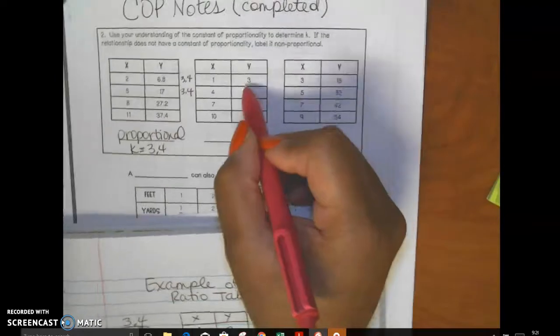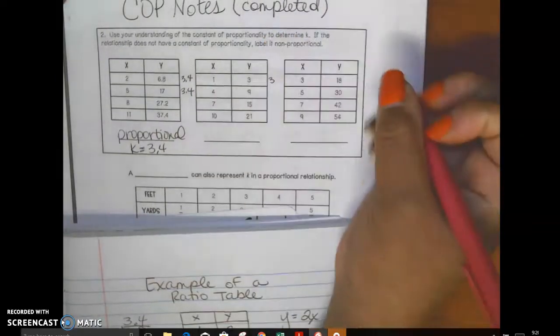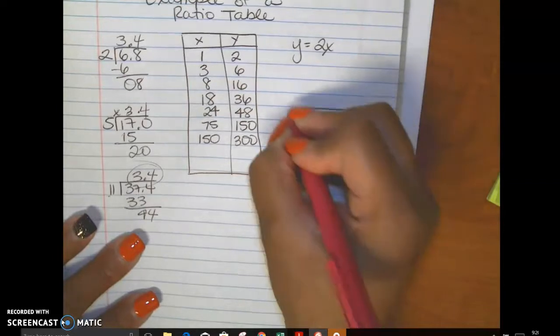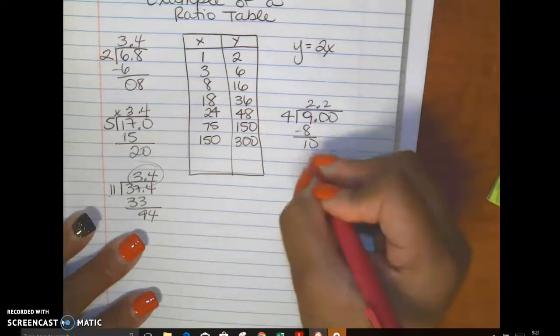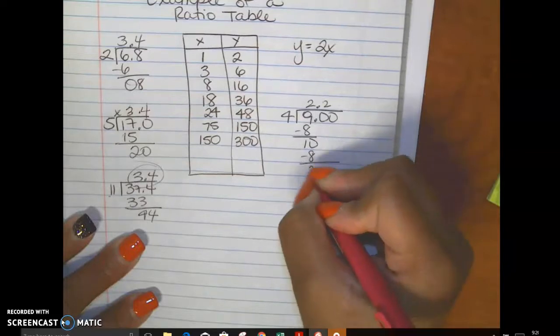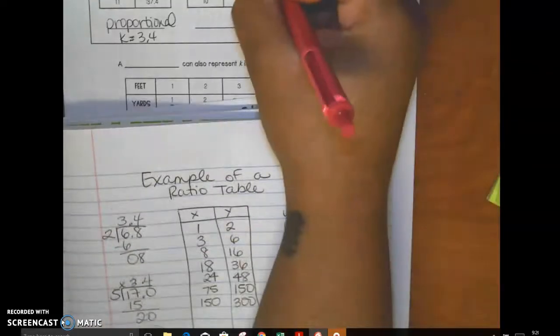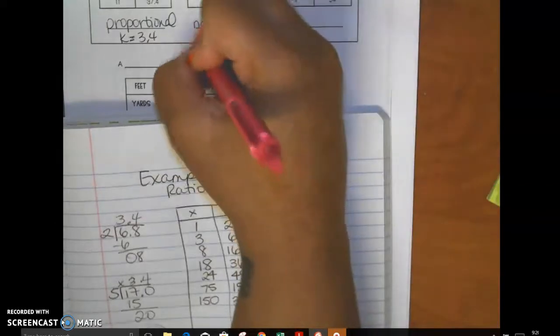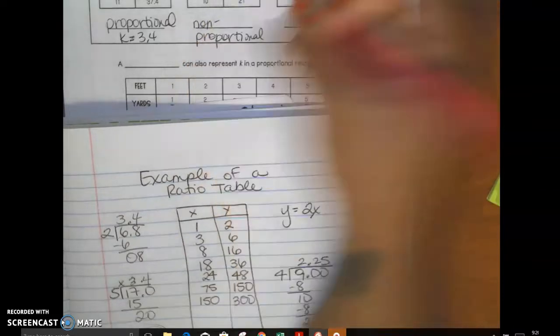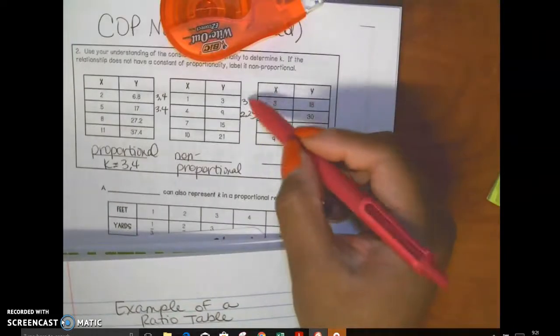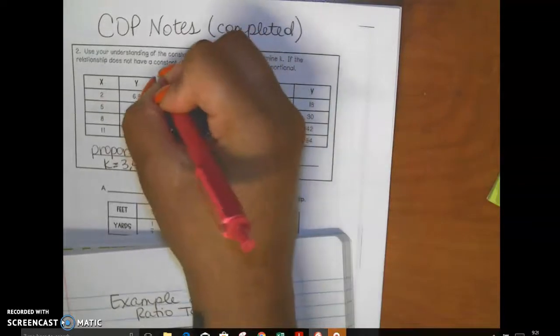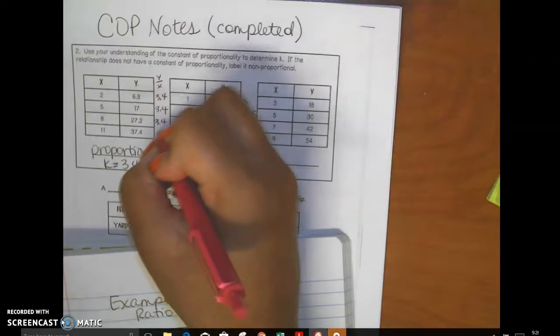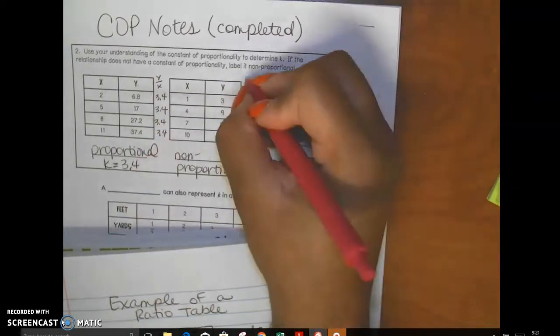Okay, over here I'm going to do 3 divided by 1, which is 3. Then I'm going to do 9 divided by 4, which is 2 point something. Let's figure it out. 9 divided by 4. 2, 8, 10, 10, 2, 8, 20. That's 2 and a quarter. Right there, I already know that they are non-proportional because these two ratios, these two ratios are not equivalent. All the ratios of y to x must be the same. So this is y divided by x. This is 3.4. This is 3.4.